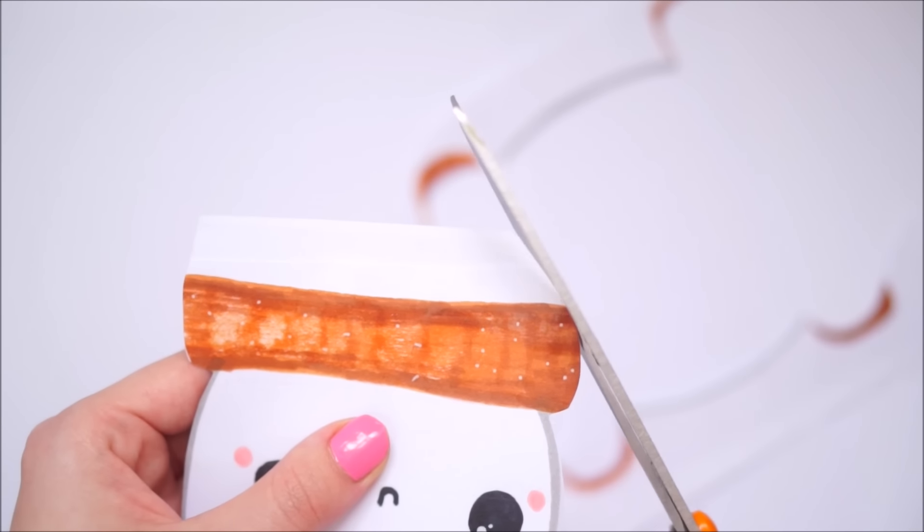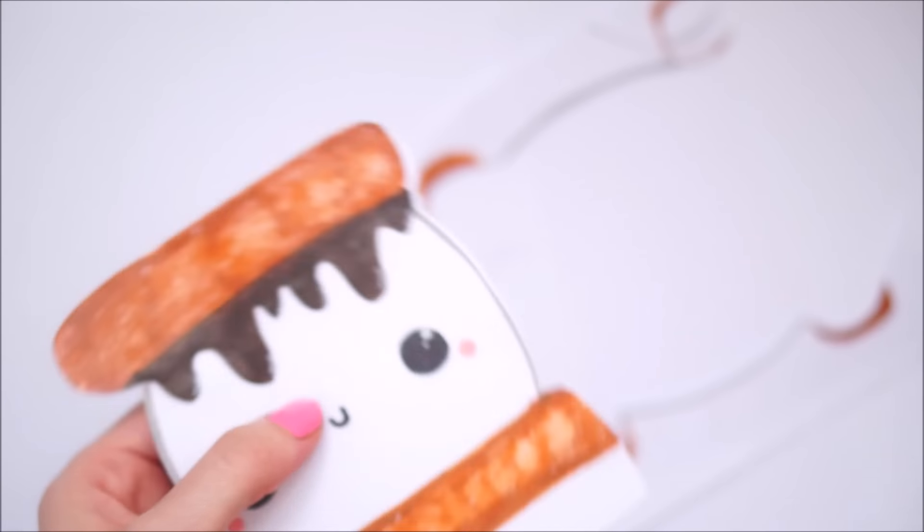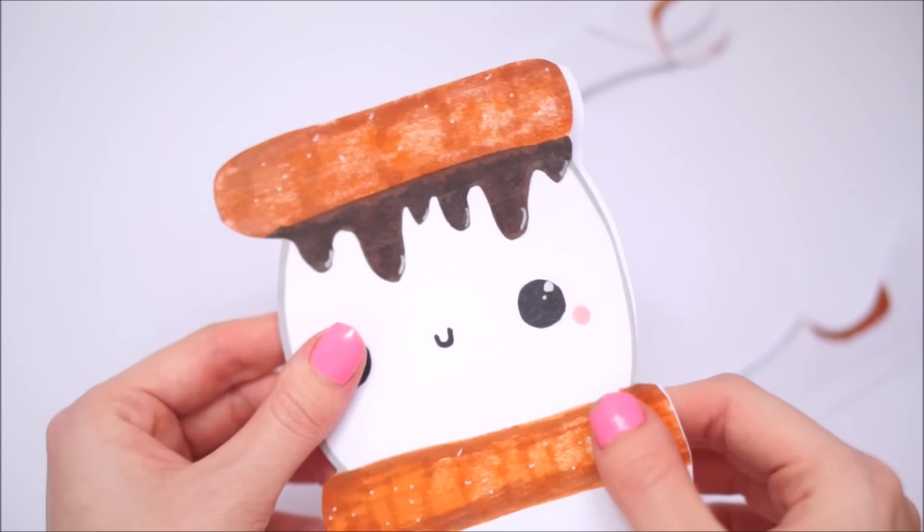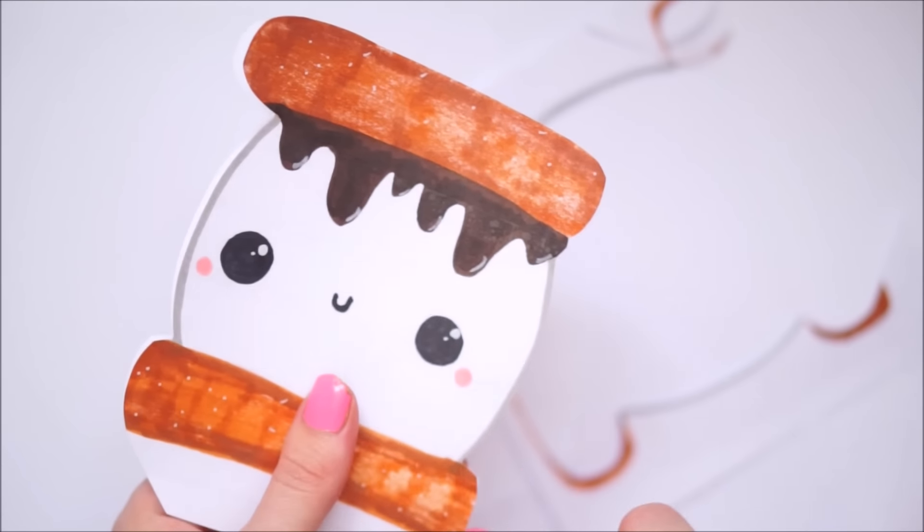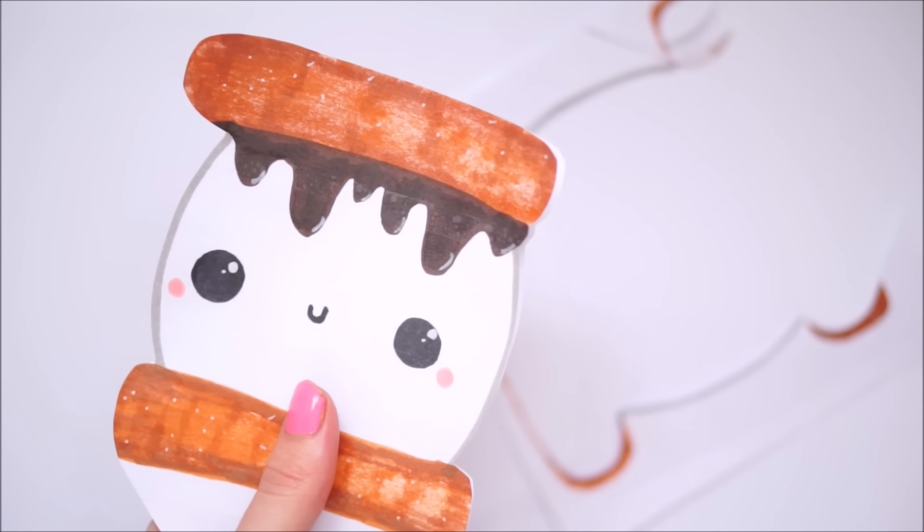Once I was fully happy with how it was cut out, I then went ahead and taped it up. As you can see, the bottom bit is still attached. The reason that I keep this one side attached is so that the pieces of paper stay lined up once I go to tape it.